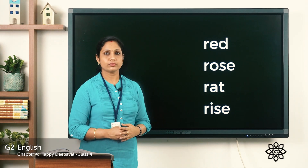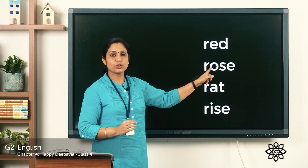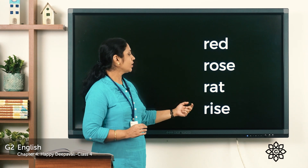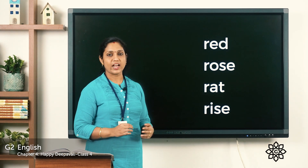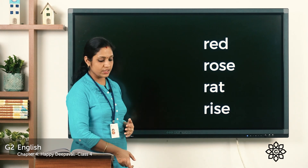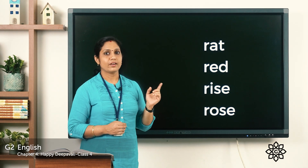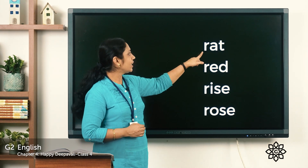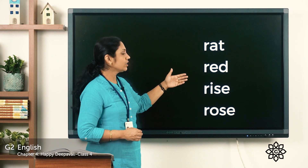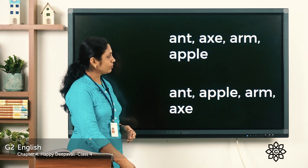When all words start with the same letter, we look at the second letter. For 'red' the second letter is e; for 'rose' it is o; for 'rat' it is a; for 'rice' it is i. Arranging by second letter alphabetically: rat (a), red (e), rice (i), rose (o). So the correct alphabetical order is: rat, red, rice, rose.